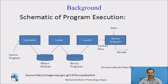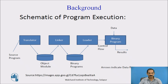Here we see the schematic of how the procedure works. A source program is given to a translator which produces an object module. This object module is given to the linker for information required for linking, and a binary program is produced by the linker which is loaded by the loader into the main machine memory, and data is supplied to it to produce the results.